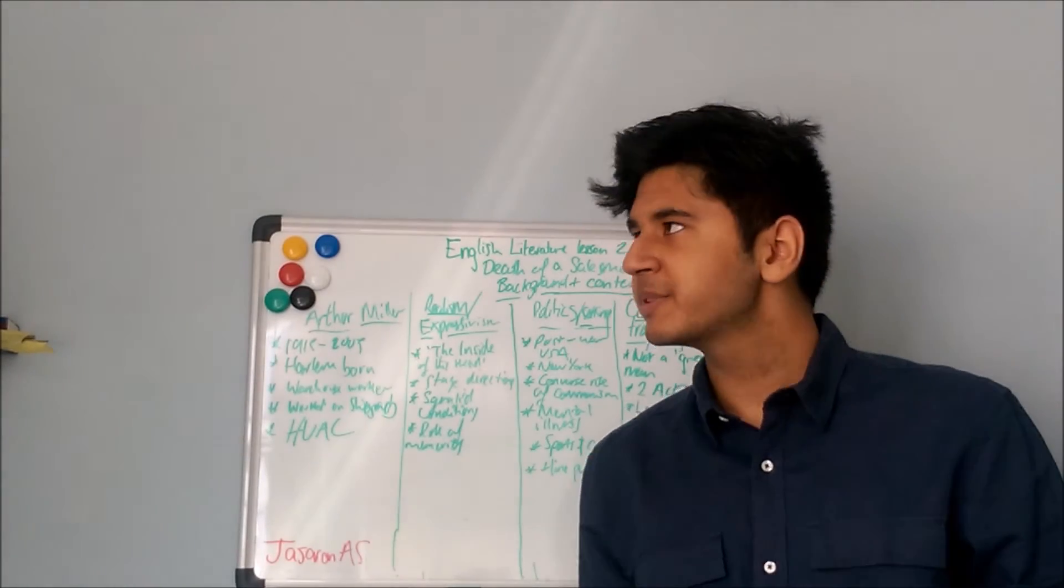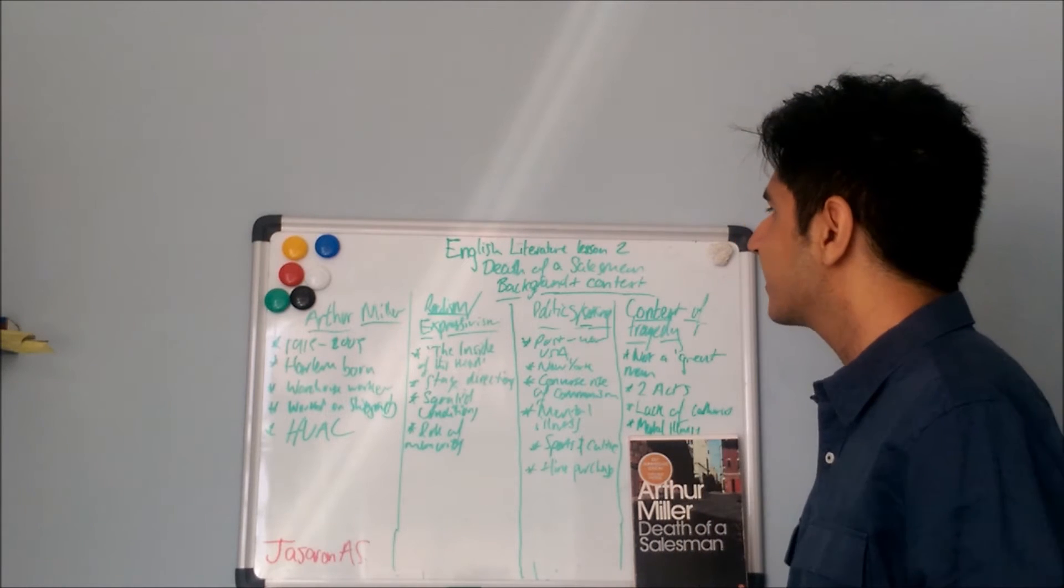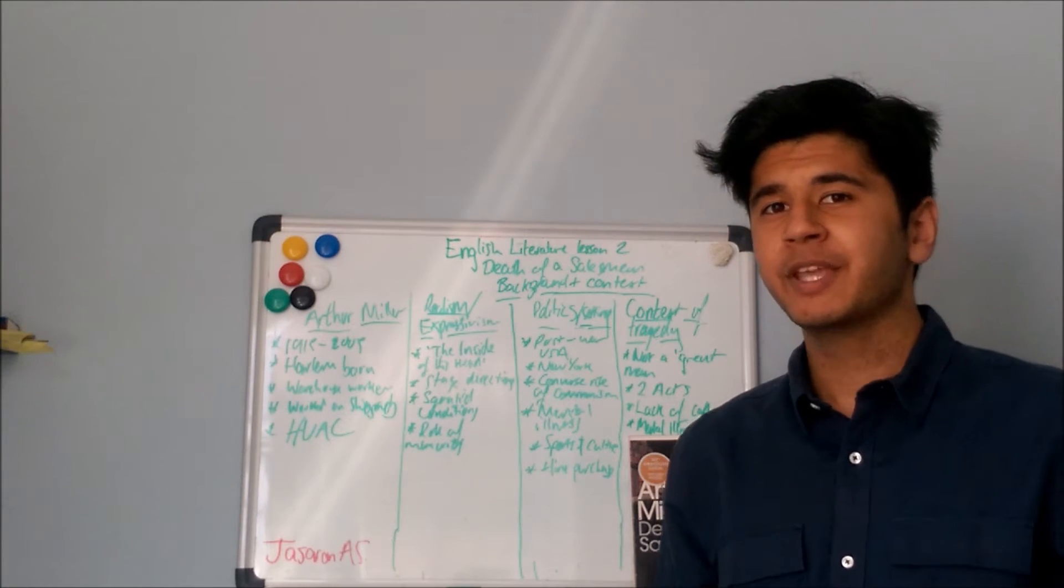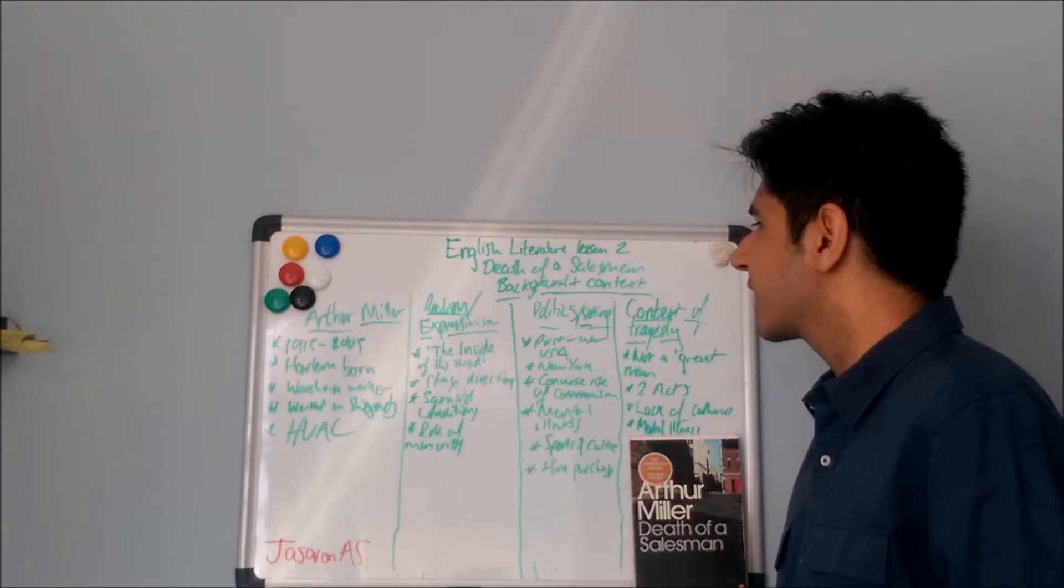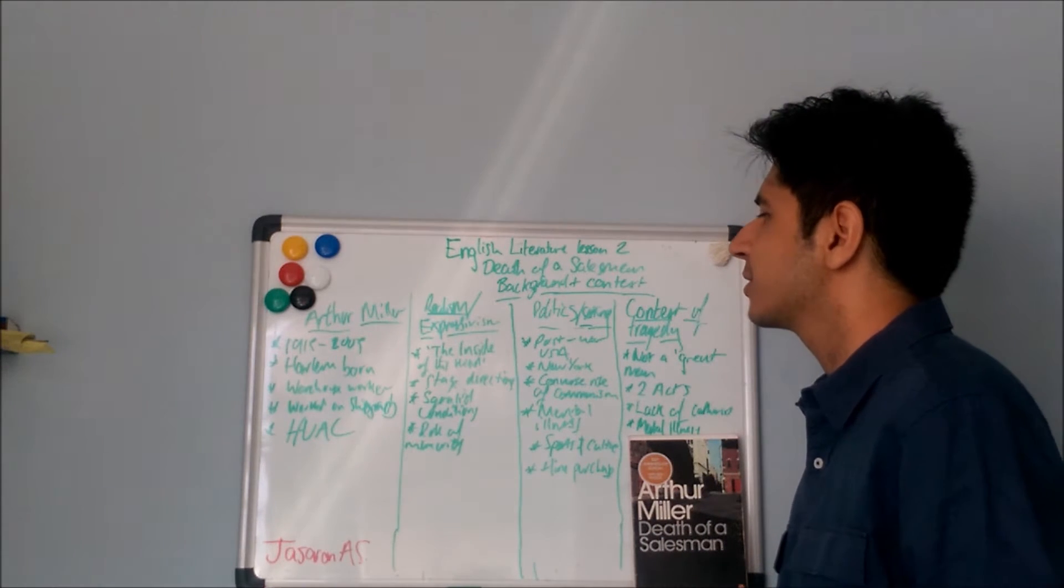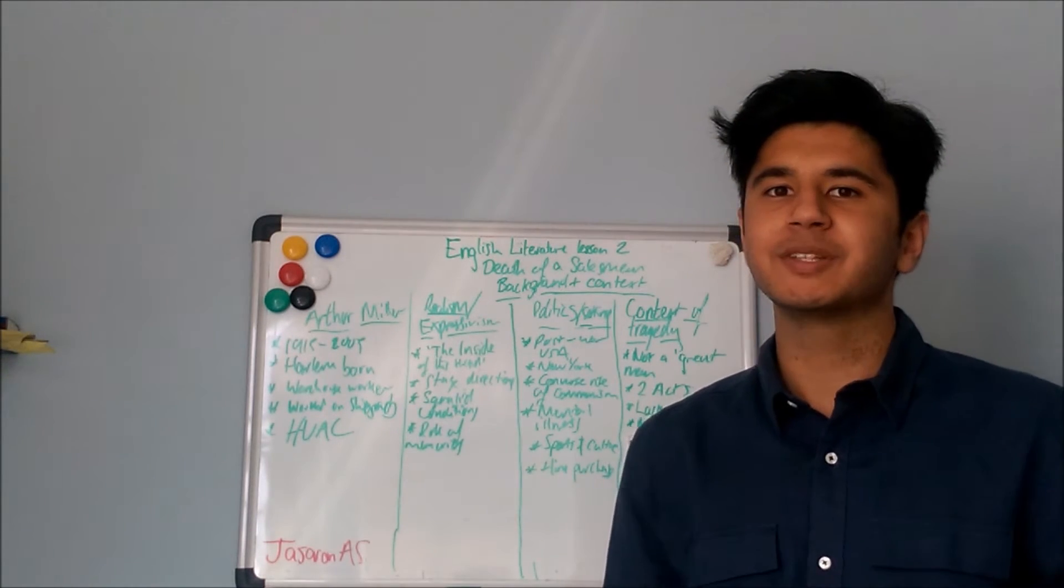Hello. Welcome to this lesson on Death of a Salesman by Arthur Miller. This is the second lesson in the English Literature course and I'm hoping to use this lesson just to give a bit of background and context to the play before we start looking at what actually happens in the play.